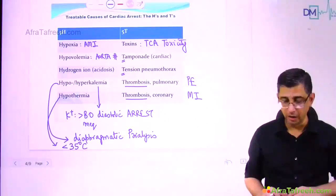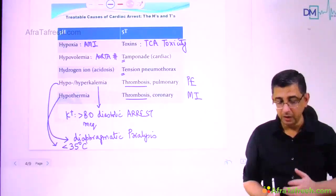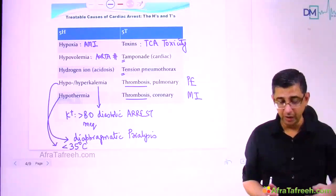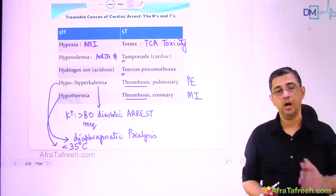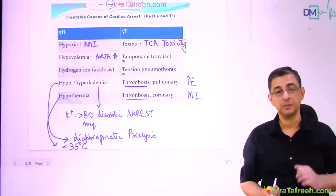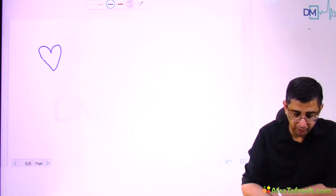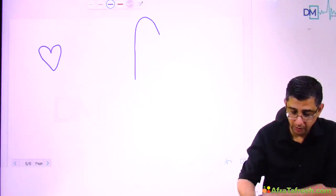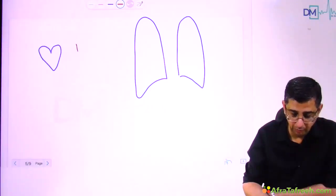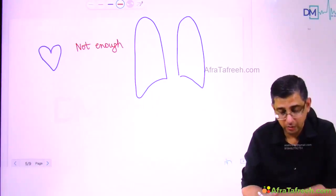Because there are 10 causes and you may not have a brain working fast enough in the heat of the moment, let's simplify. One: the heart is not getting sufficient inflow — that is hypovolemia. Another: the lungs are not getting sufficient oxygen — that is hypoxia. Two H's solved. Heart is not getting enough, lungs are not getting enough — so you give fluids and oxygen to the patient.